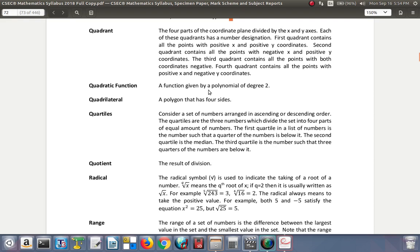Quadratic Function. A function given by a polynomial of degree 2. That means it has something like X squared. No X cubed because that would be a cubic equation. It should have X squared and X. It might have X or numbers in it. Quadrilateral. A polygon that has four sides. So quad means four.